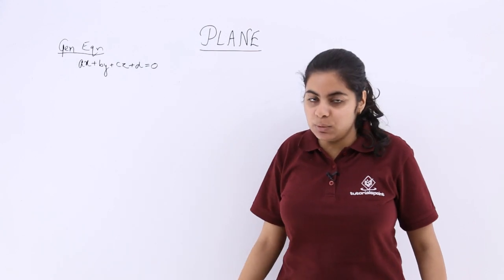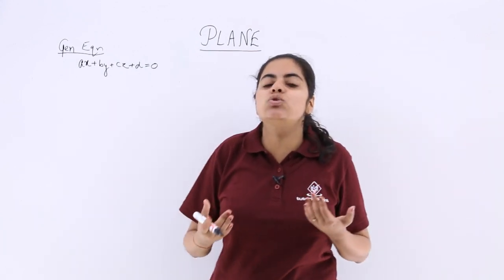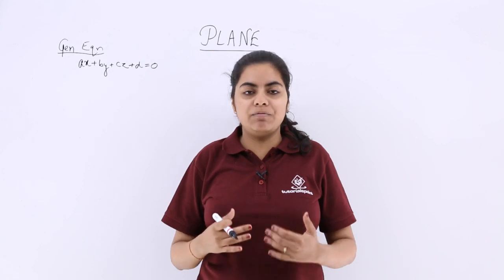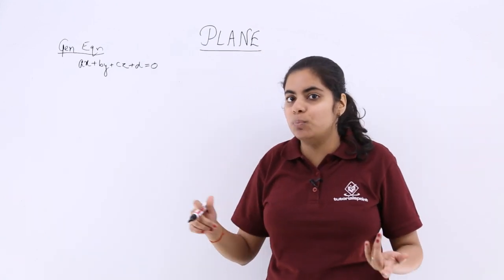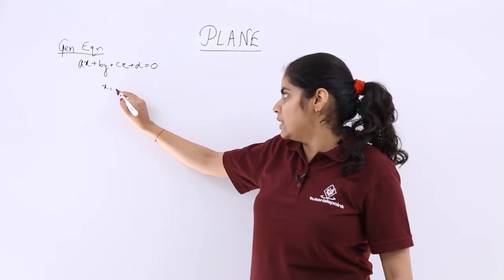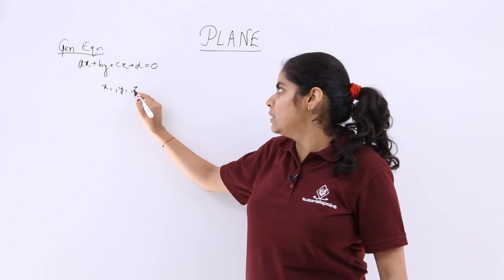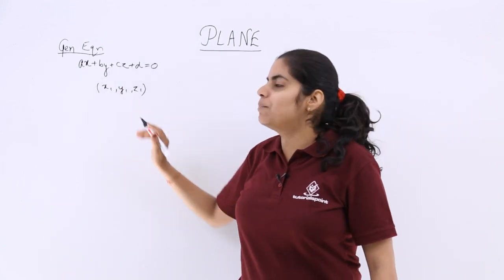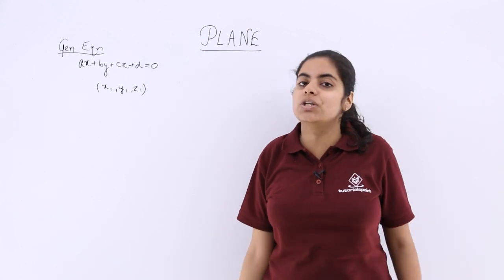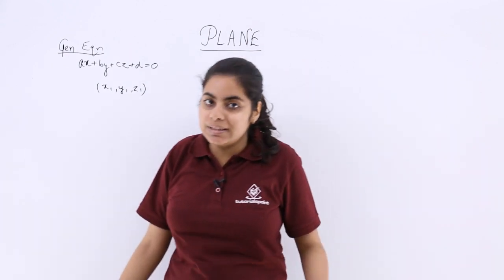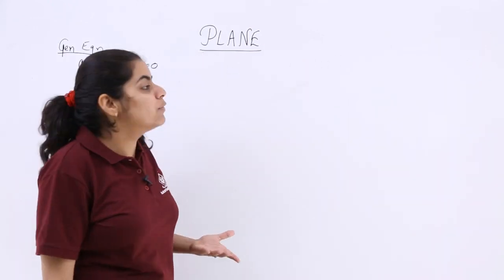After knowing the general equation of a plane, we also need to know the equation of a plane when we know that the plane passes through point x1, y1, z1. If it has been given that a plane passes through the point x1, y1, z1, what is the general equation of a plane? That time the general equation of a plane would change.